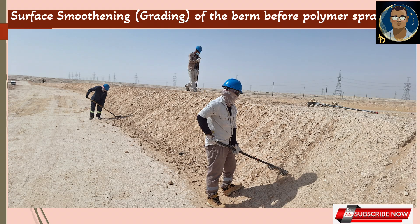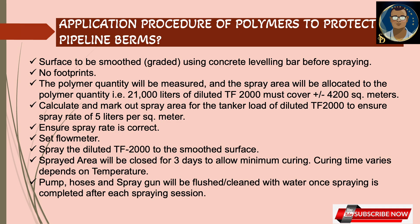Application procedure: the surface shall be smoothed using a concrete leveling bar before spraying — no footprints. The polymer quantity should be measured and the spray area allocated accordingly. For example, 21,000 liters of diluted TF-2000 must cover approximately 4,200 square meters, giving a spray rate of 5 liters per square meter. Calculate and mark out the spray area for the tanker load of diluted TF-2000. Set the flow meter accordingly and spray the diluted TF-2000 onto the smoothened area. The sprayed area will be closed for 3 days to allow minimum curing — curing time varies depending on temperature: faster in summer, slower in winter. Pumps, hoses, and spray guns will be flushed and cleaned with water after each spraying session.